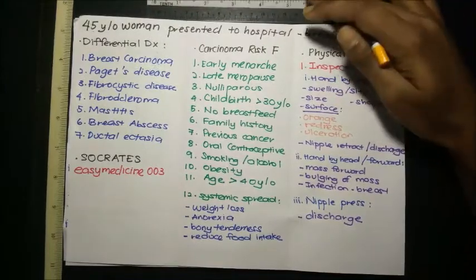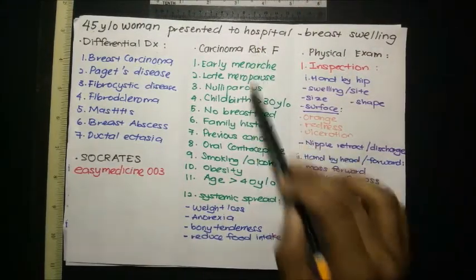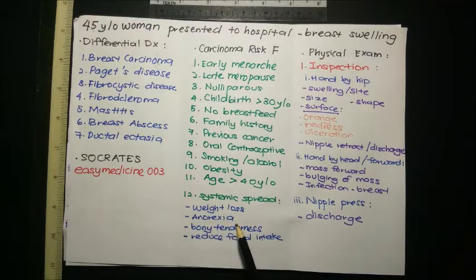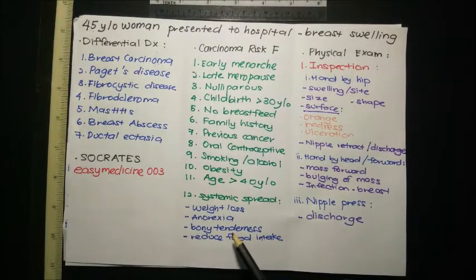Age is also important — more than 40 years old is a risk factor, and this patient is 45 years old, which is a common age group for breast carcinoma. Apart from risk factors, we need to focus on systemic symptoms supporting our diagnosis: weight loss, anorexia, bone tenderness, and reduced food intake — these symptoms point toward carcinoma.